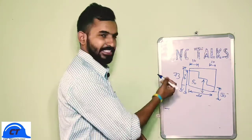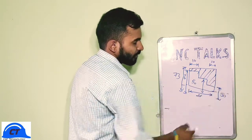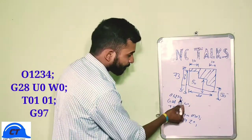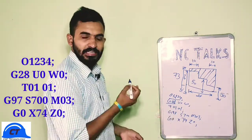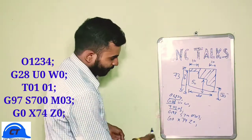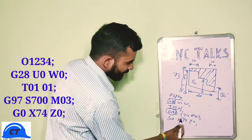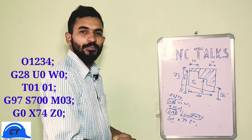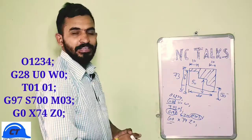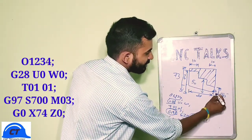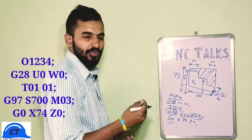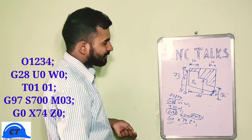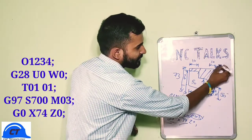Now let's create a program using G72 for this bar. We need to remove this much amount of material. Let's start our program with the program number, G28 for home position, T01 for tool change with offset number 01, G97 for constant RPM of 700, and M03 for starting the spindle in the clockwise direction. We'll call our tool rapidly using G0 near the component. Since this is our origin at 0,0 and in G72 our tool moves in the X direction, we'll call our tool rapidly at X74 and Z0, which is at this position, maintaining a 1mm gap between our workpiece and our tool.